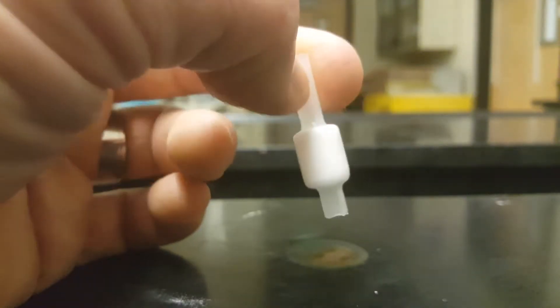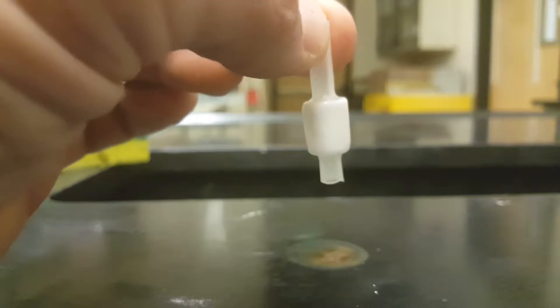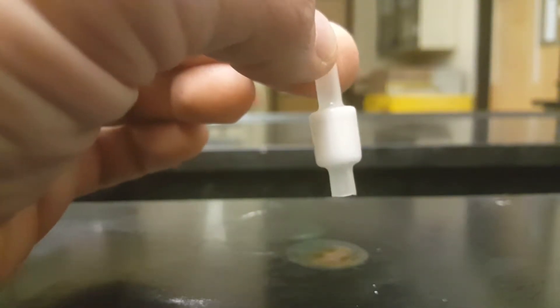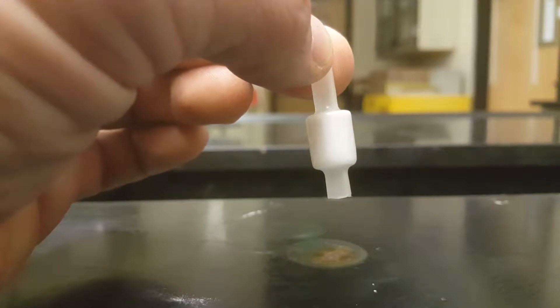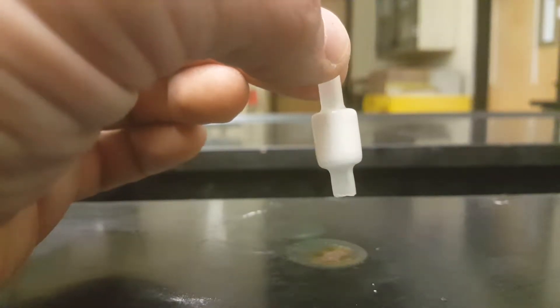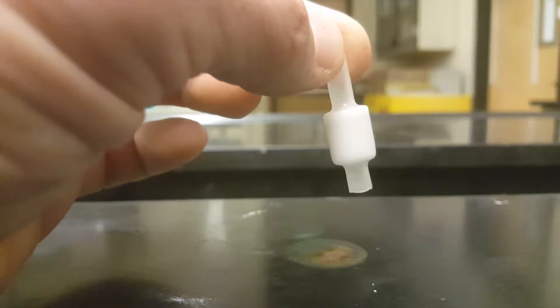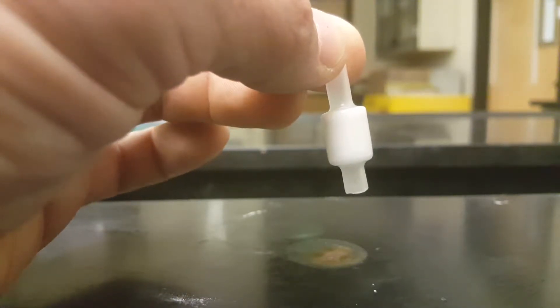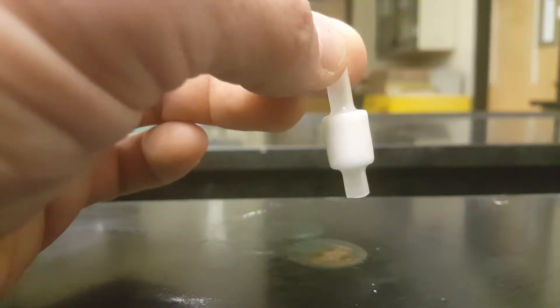So the mobile phase that goes through this cartridge should separate based on polarity. Because the stationary phase inside of the cartridge is nonpolar, then we should see nonpolar things move more slowly and polar things move more quickly.